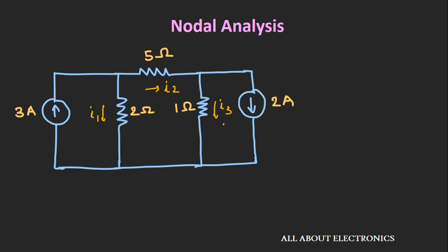Let's say we have given one electrical circuit and in this circuit we want to find the current through all the three resistors using nodal analysis technique. This nodal analysis technique is nothing but applying Kirchhoff's current law followed by Ohm's law at all the nodes in the electrical circuit. If you see this circuit, we have total three nodes: node 1, node 2, and node 3 which is a reference node. We will apply KCL at node number 1 and 2.